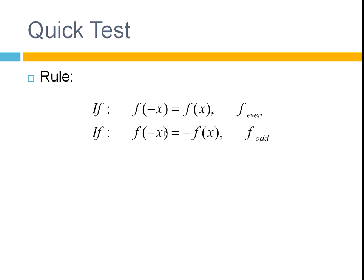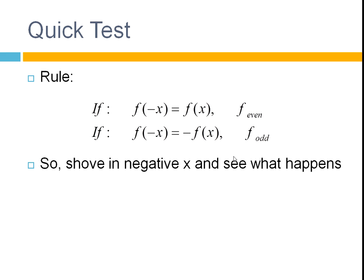Whereas if you've got f of negative x giving you minus f of x, you've got an odd function. So by substituting in a negative x, you get negative f of x, you get an odd function. So all you do is shove in a negative x and see what happens, compare your result to the rule and it'll tell you if it's even or odd.